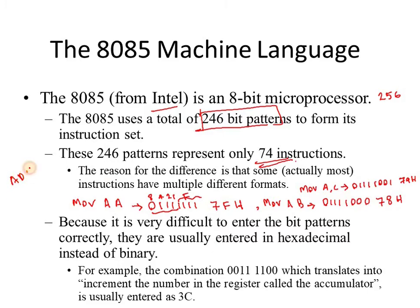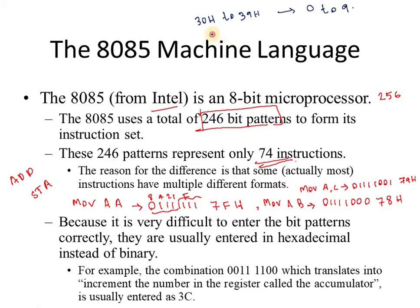There are many different instructions such as store accumulator, add, and others. For reference, hexadecimal values 30H to 39H represent the digit characters 0 to 9, and 41H to 5AH represent alphabets A to Z.